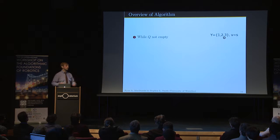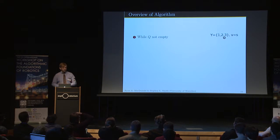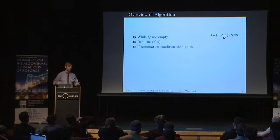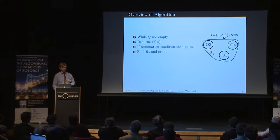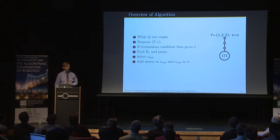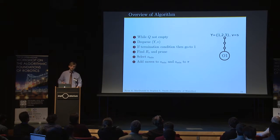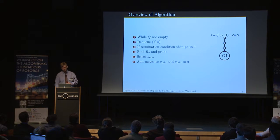Here's a quick overview of the algorithm. We start with a queue of robot states. We dequeue a state and check the termination conditions — this ensures the policy is complete. Assuming it's not terminal, we find the reachable observations and prune them. We find the minimizer using weighted conditional entropy, and add the move actions and the observation to the policy tree. Because a constructive observation partitions the belief, we get two outgoing robot states, which we add back into the queue.